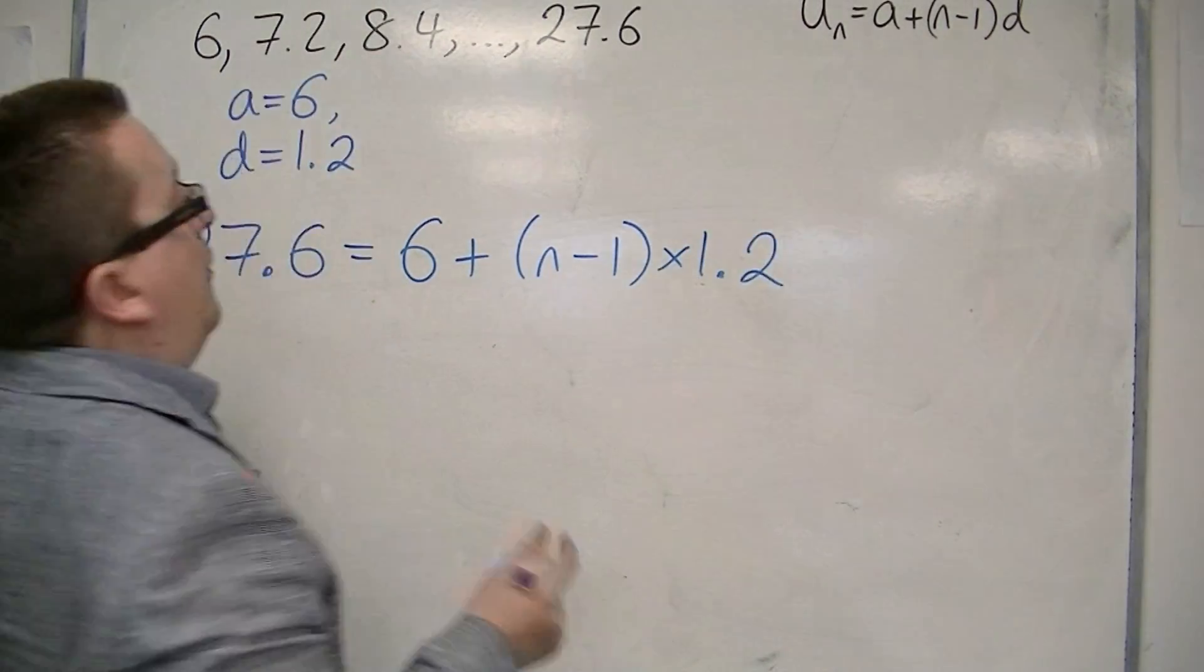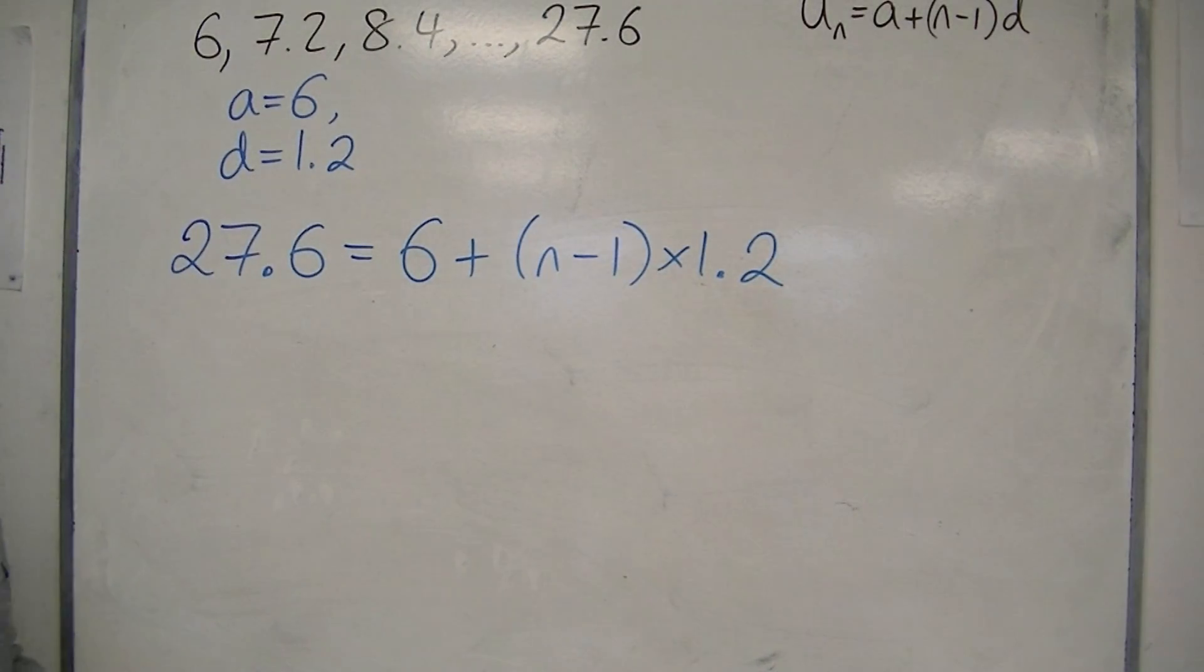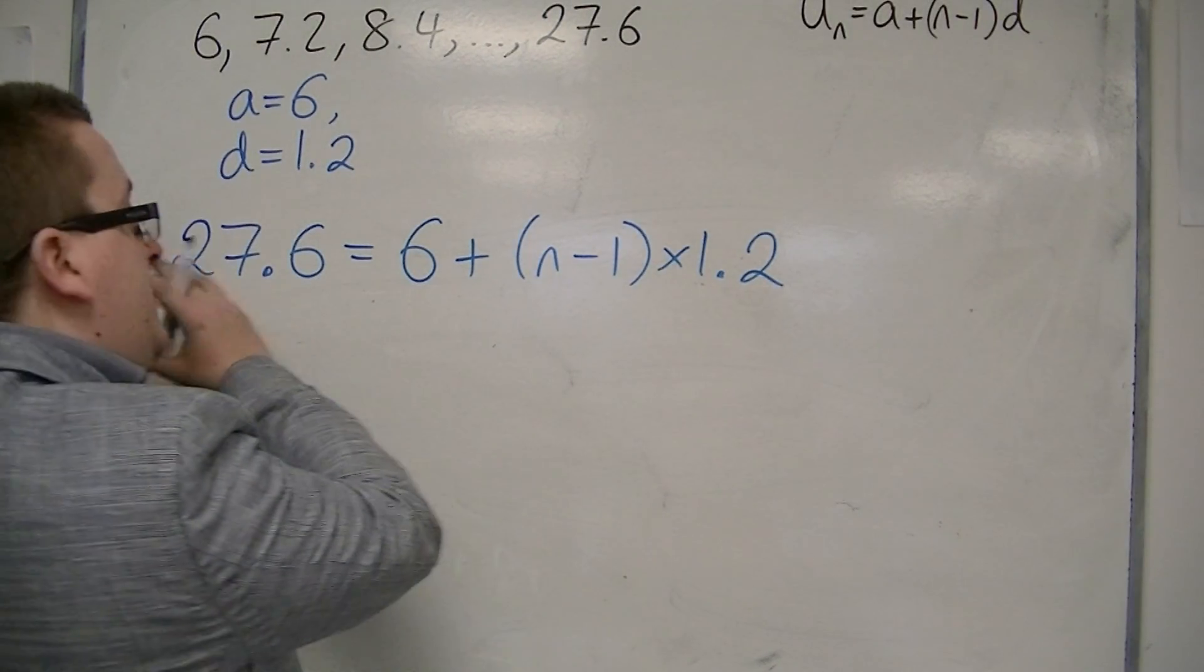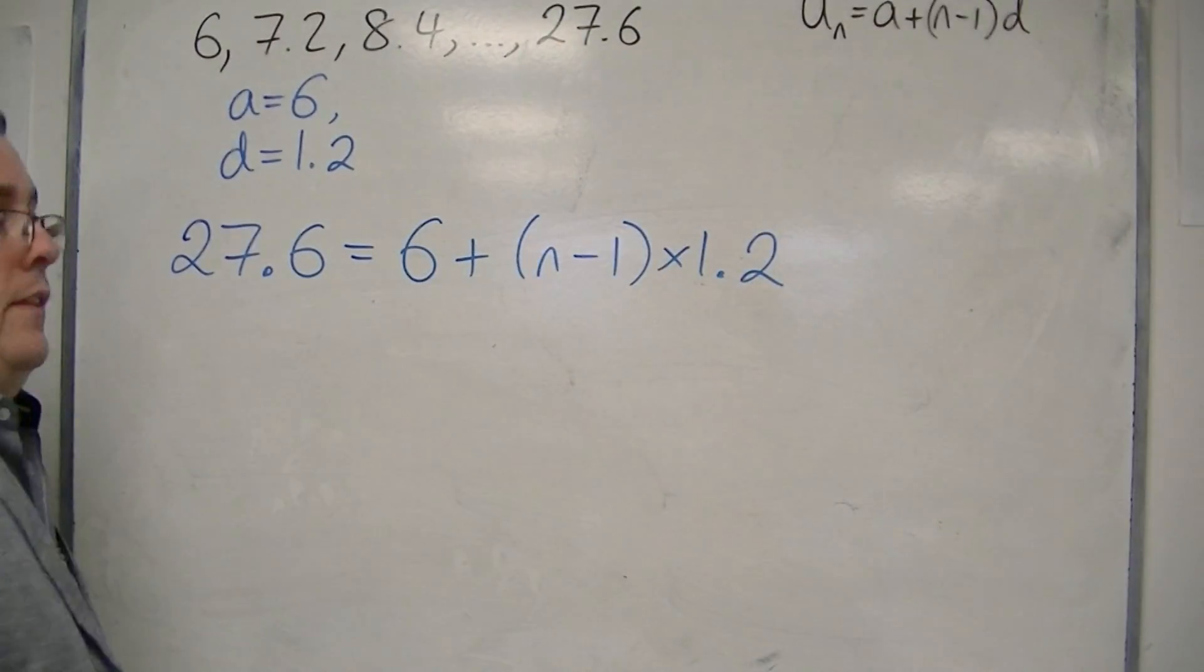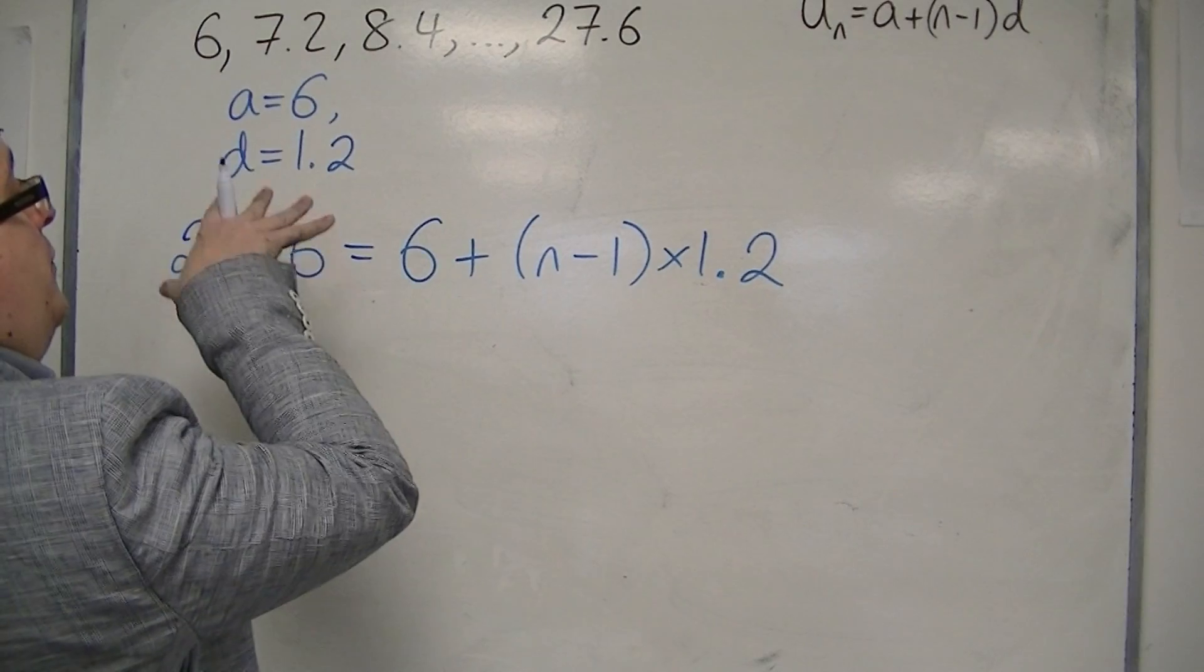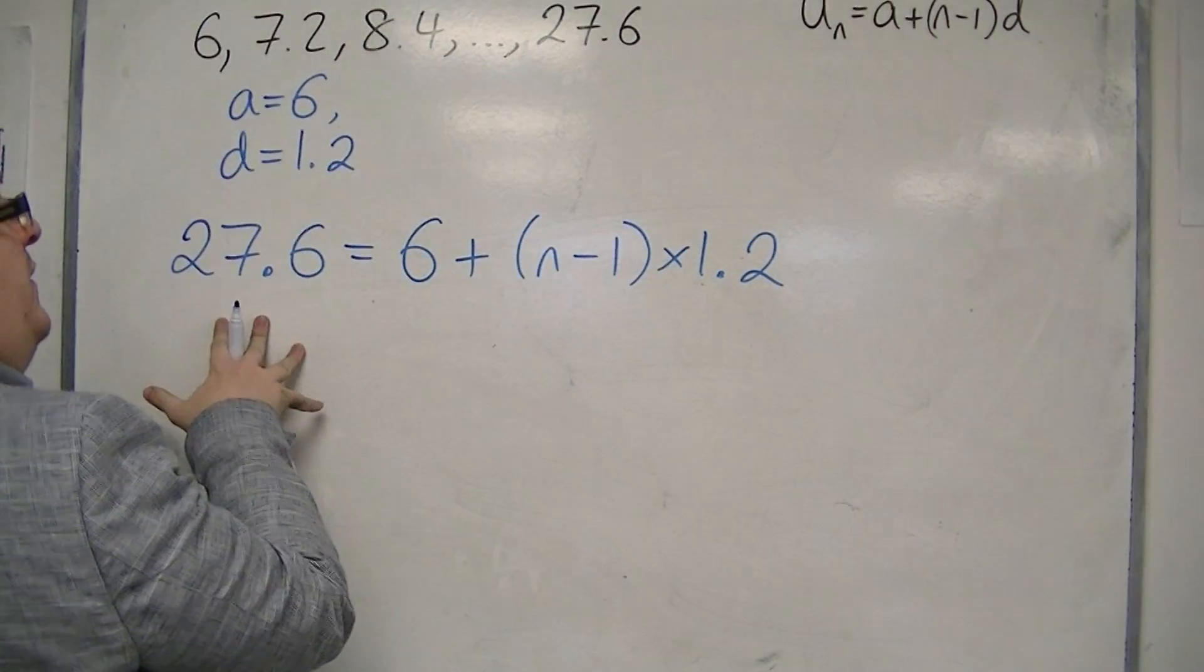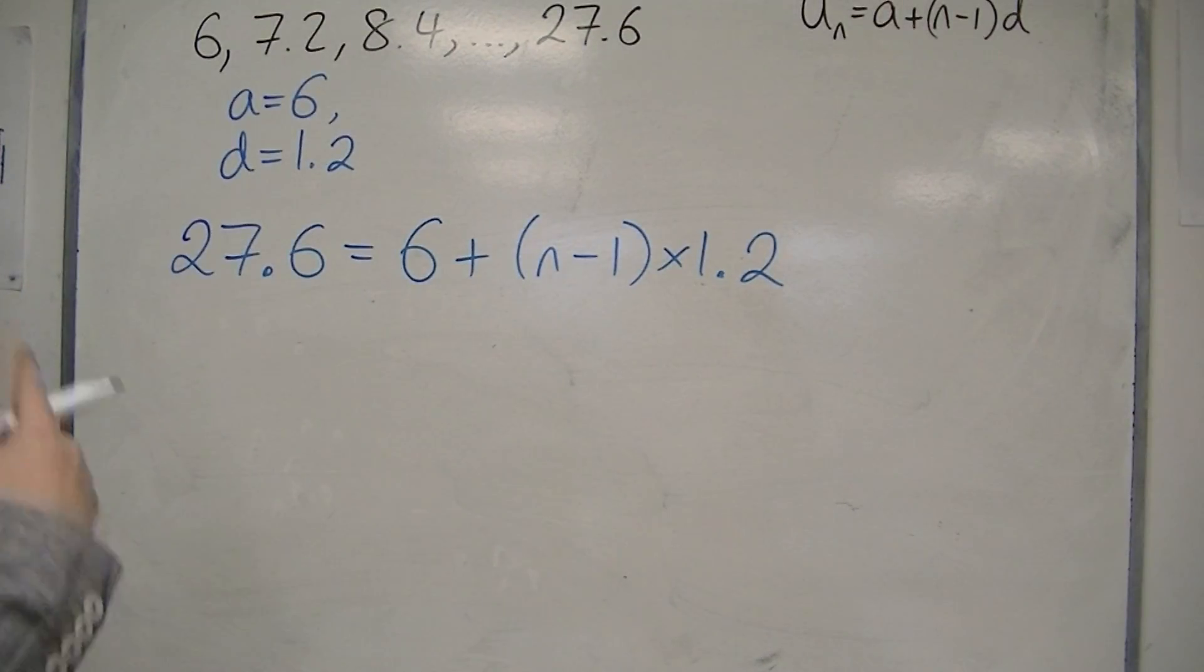I want to know what that value of n is, so that just breaks down to solving this equation. All I've done is replaced the un with 27.6, the last term in the sequence, to try and determine what term it is.